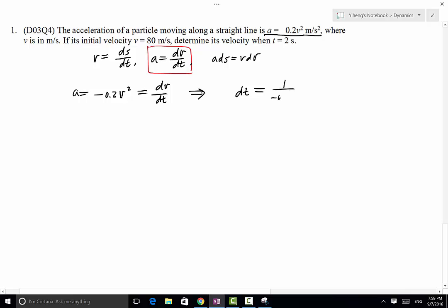1 over -0.2v² dv. The purpose of this is to separate the variables, so time is on one side and anything involving velocity is on the other side. We can do a transformation, and this becomes -5v^(-2) dv. Now we can integrate on both sides.